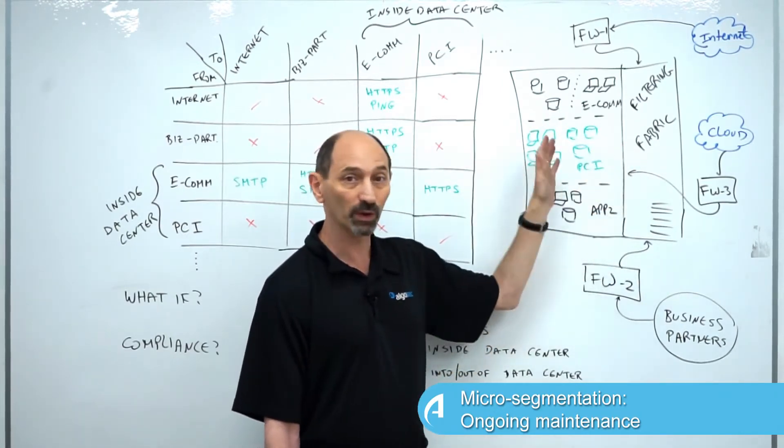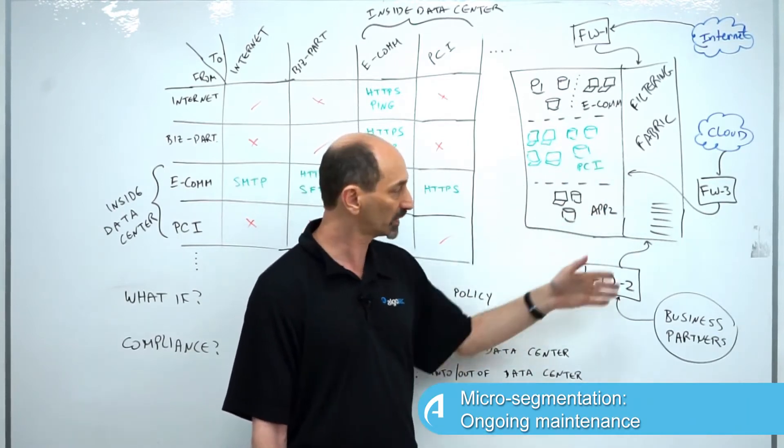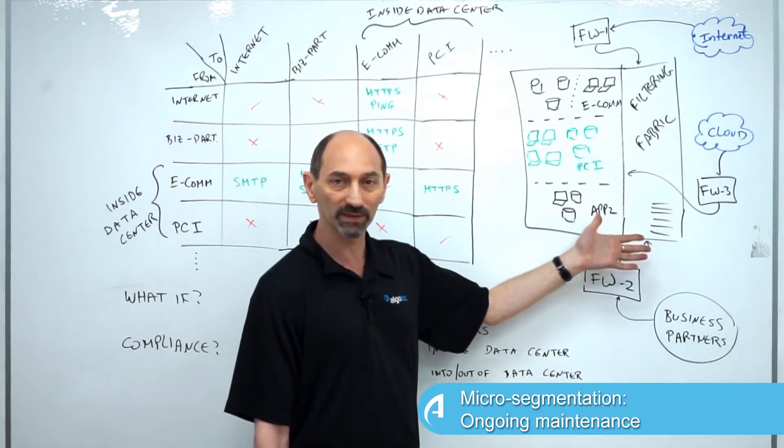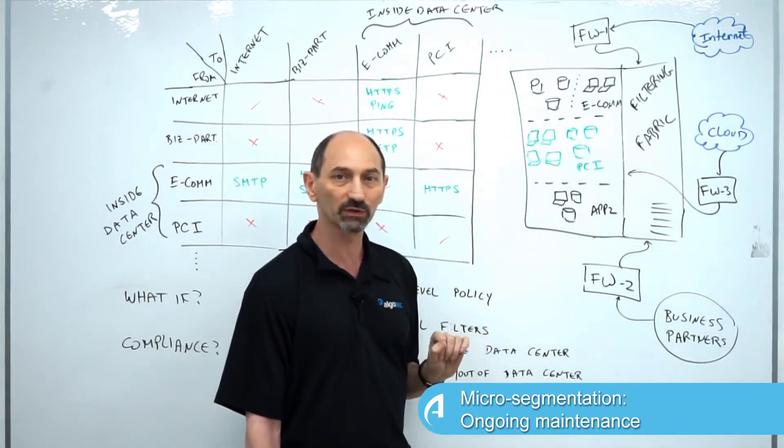These are filtering technologies that are outside of the filtering fabric and they also have policy in them that needs to allow the traffic going through them, each with its own technology. So when we're maintaining all of this, we need to maintain it holistically so that all the different filtering technologies work and enforce exactly the same type of policy.